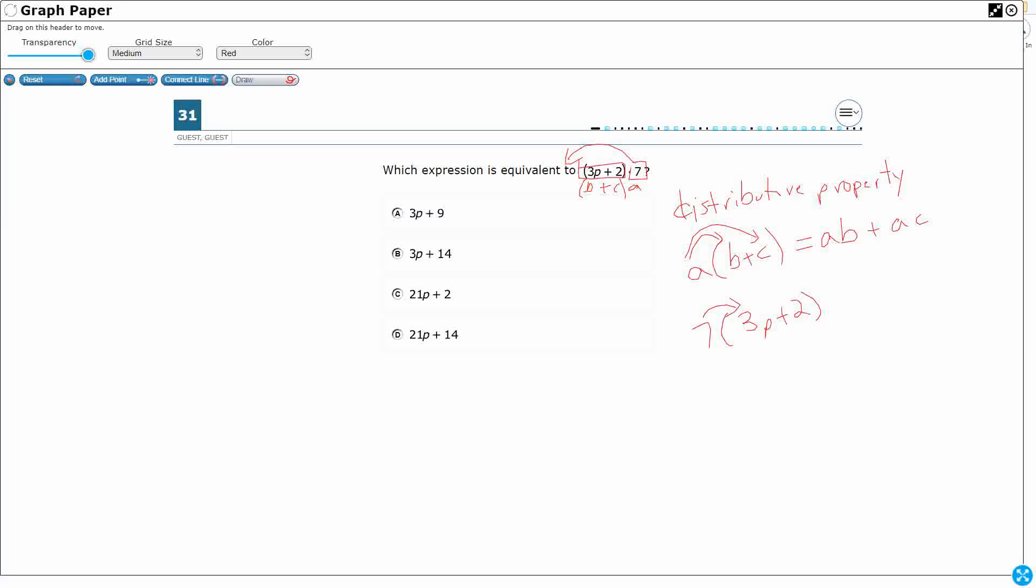So 7, right? So here's my a b, right? So I'm going to do 7, that's my a, times 3p, and then I'm going to add my ac.